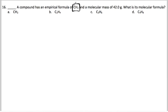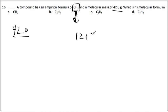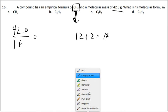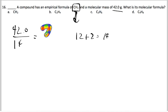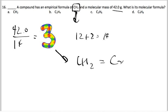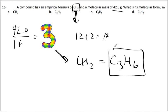Here's the next problem — they're actually giving you the empirical formula. The actual molar mass is 42.0 grams, so that goes on top of the fraction. I calculate the molar mass of the empirical formula CH₂: carbon is 12 plus two hydrogens is 2, giving 14. So 42 divided by 14 equals 3. The magic number is 3. Multiply: 3×C = C3, 3×2H = H6. The molecular formula is C₃H₆.